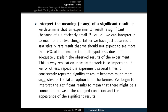Finally, we'll interpret the meaning, if there is any, of a significant result. If we determine that an experimental result is significant because of a sufficiently small p-value, we can interpret it to mean one of two things: either we have just observed a statistically rare result that we should not expect to see more than p% of the time, or the null hypothesis does not adequately explain the observed results. This is why replication in scientific work is so important. If we or others repeat the experiment several times, a consistently repeated significant result becomes much more suggestive that there might be a connection between the changed condition and the appearance of significant results.